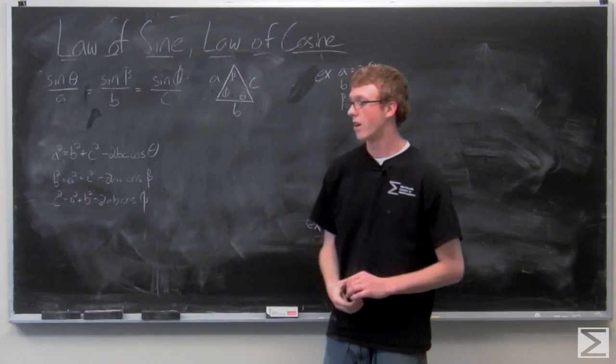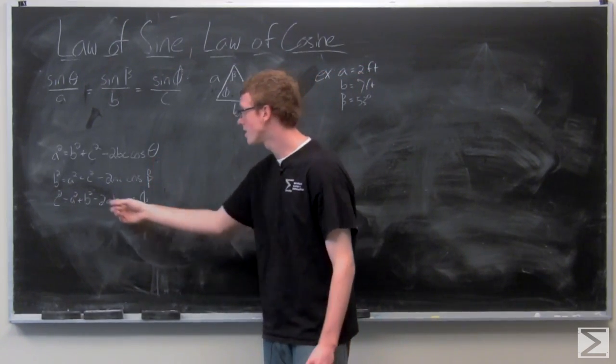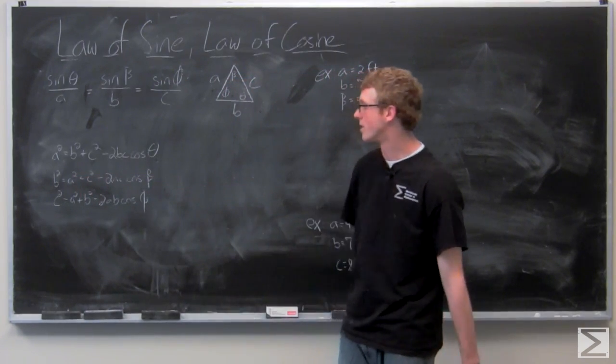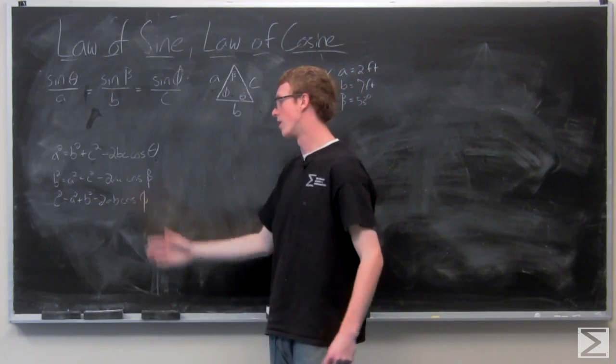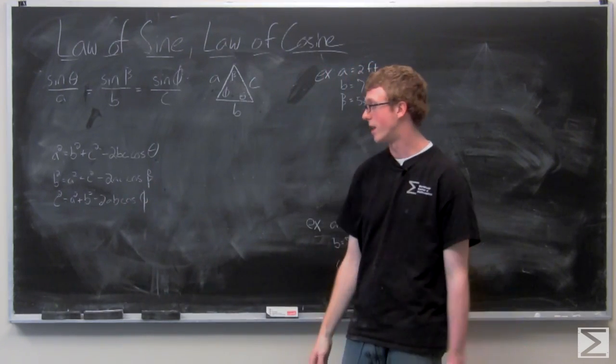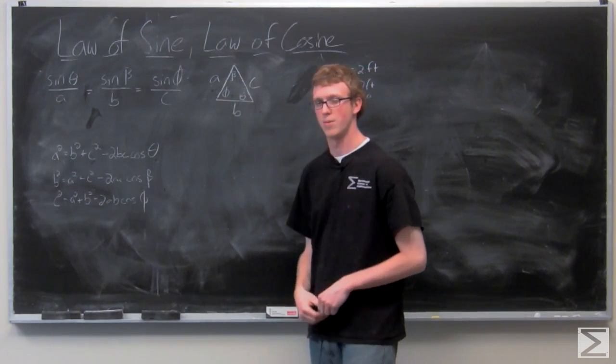And then the other two laws for cosine, for this triangle at least, b squared equals a squared plus c squared minus 2ac cosine of beta. And then again, c squared equals a squared plus b squared minus 2ab cosine of phi, which is the angle opposite of c.